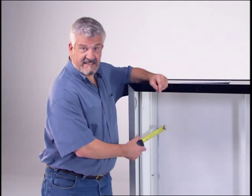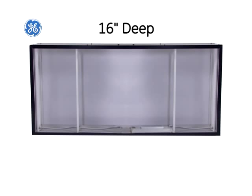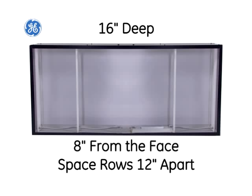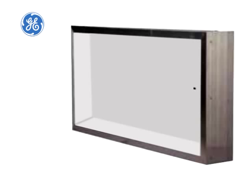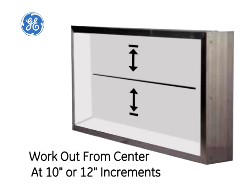This sign is sixteen inches deep, so the Tetra Powerstrip DS LED system will be eight inches from the face. I need to space my rows twelve inches apart. Find the position for the center row, then work out from the center at ten inch or twelve inch increments. That approach will give you even lighting throughout the sign.